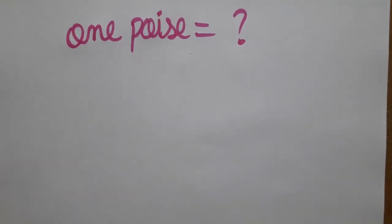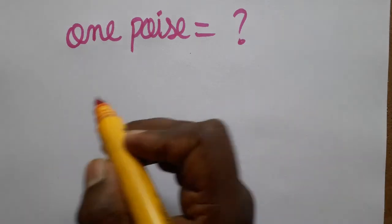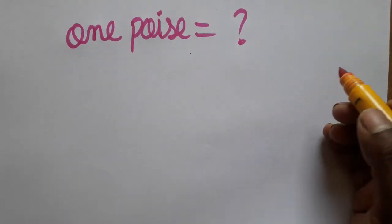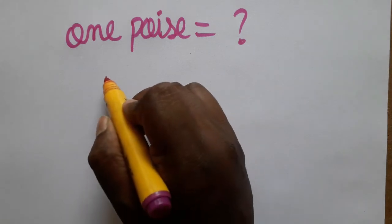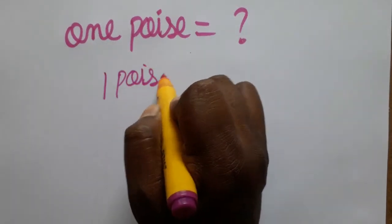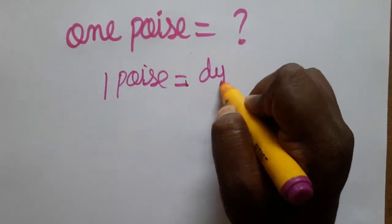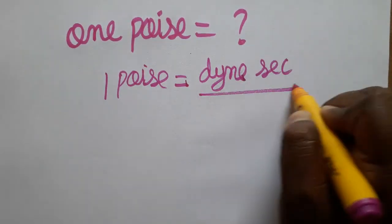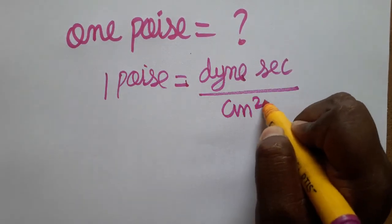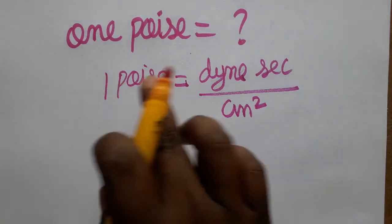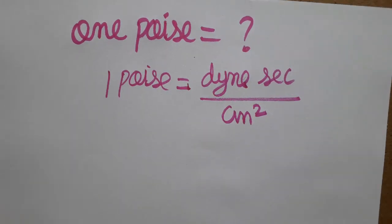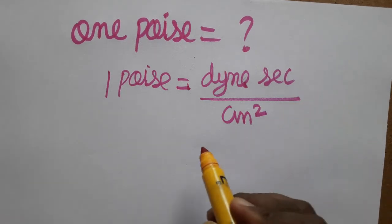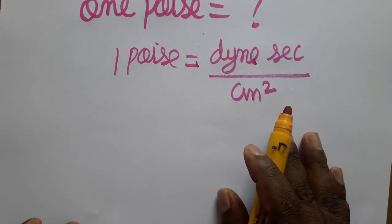Hello friends, today we are going to discuss what is one poise. One poise is a unit of coefficient of viscosity. We can write it as dyne second per centimeter square. In this video we are going to discuss how one poise equals dyne second per centimeter square — that is the thing we are going to discuss.